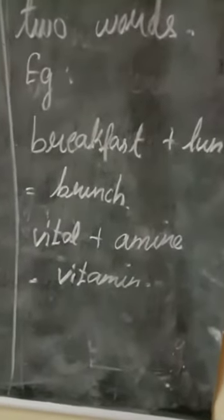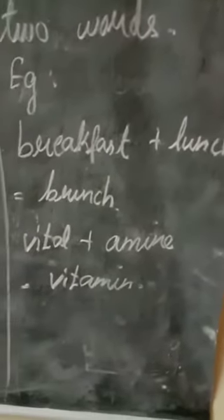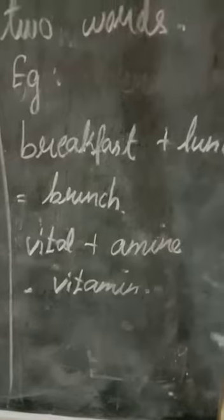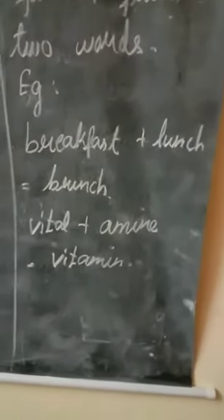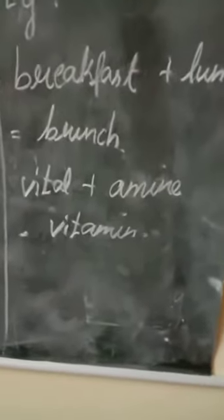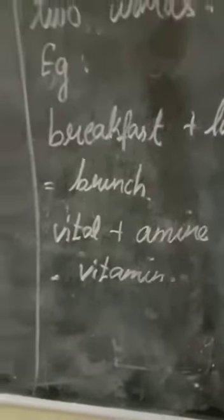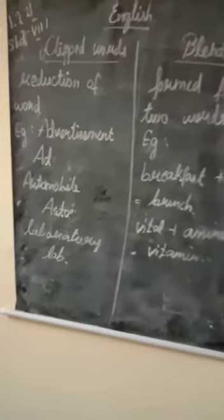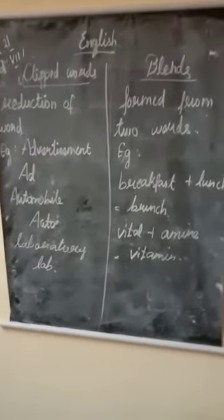For example, 'breakfast' plus 'lunch' equals 'brunch.' Next, 'vital' plus 'amine' gives us 'vitamin.' So this is the difference between clipped words and blends. Thanks.